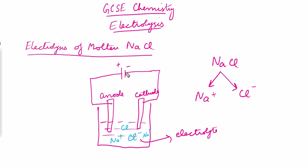When the current passes through the electrodes, it flows from the positive terminal through the electrodes and ends at the negative terminal. The positive sodium ions move towards the cathode and the negative chloride ions move towards the anode. This movement of ions means current is flowing through the electrolyte.